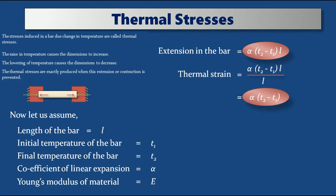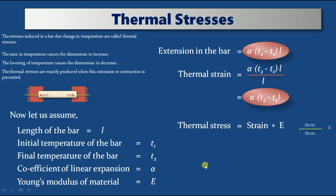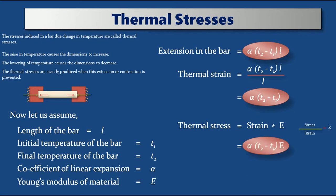With the help of this strain we can find the stress from the formula of Young's modulus. Thermal stress is equal to strain into Young's modulus, because stress is directly proportional to strain and the constant of proportionality is E. So thermal stress = alpha into (T2 minus T1) into E. In place of strain we write alpha into (T2 minus T1), and the remaining term is Young's modulus of the material. This formula gives the thermal stress inside the body due to change in temperature. Try to remember all three formulas: expansion/contraction, thermal strain, and thermal stress.